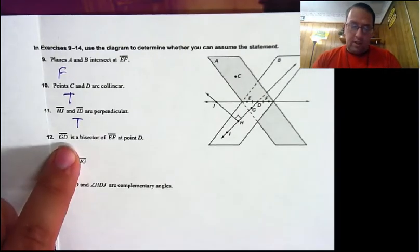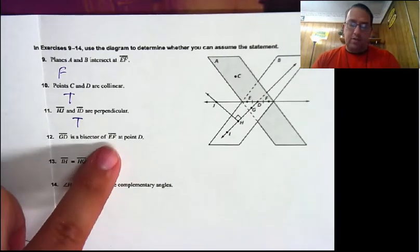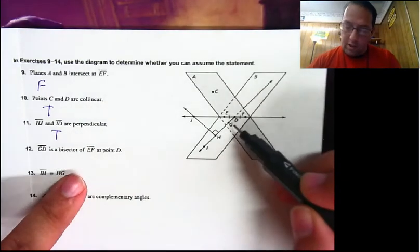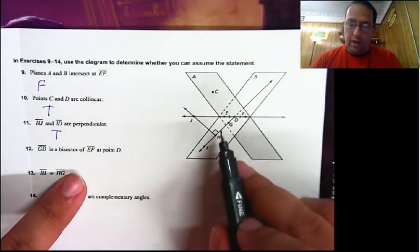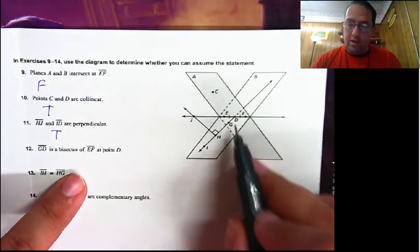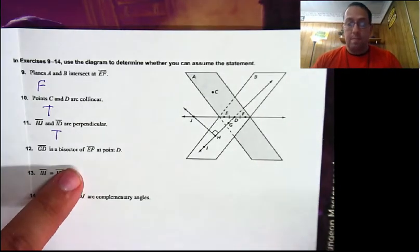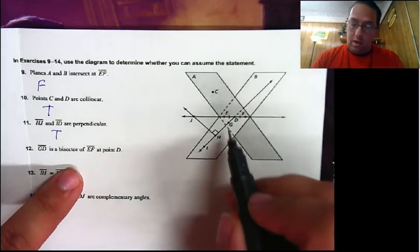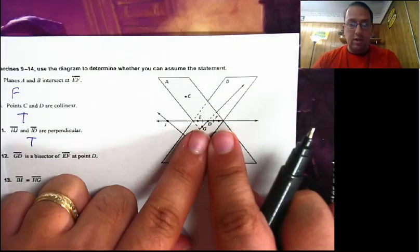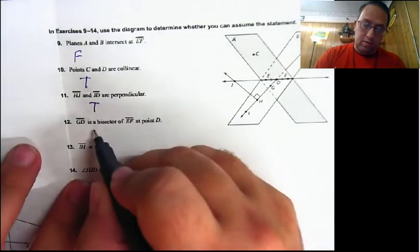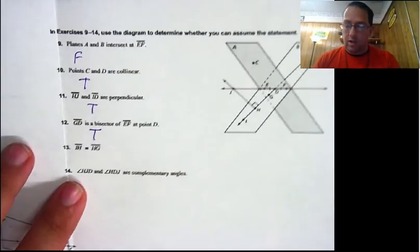Next: segment GD is a bisector of segment EF at point D. There is GD right here, and EF right there — and it does intersect at D. Can we assume that it is bisecting at point D? Yes, we can — it is marked, and so since it's marked we can assume that this is true. We couldn't assume it without the marking, which is why we added tick marks in our sketch earlier.